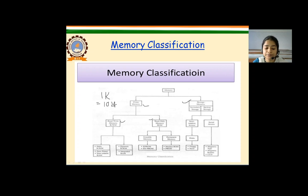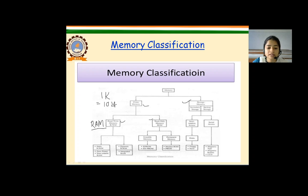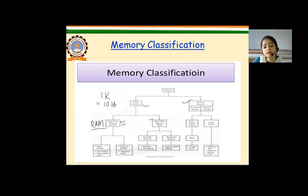Read-write memory is also called RAM — Random Access Memory. The meaning of random access is that the microprocessor can access any of the registers of this memory with the same speed. Both read and write operations can be performed in RAM: the microprocessor can read or access any data or instruction from the read-write memory, and it can also perform write operations and store data in it.